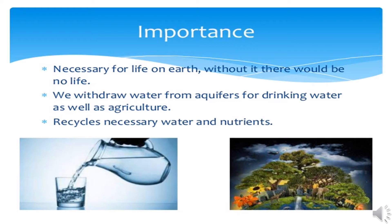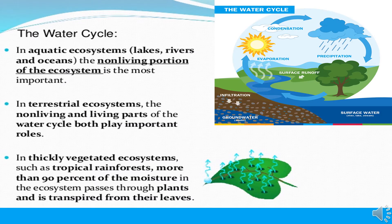The water cycle is very important for human as well as animal life. It is necessary for life on earth; without it, there would be no life. We withdraw water from aquifers for drinking water as well as agriculture and recycle necessary water and nutrients. In aquatic ecosystems like lakes, rivers, and oceans, the non-living portion of the ecosystem is the most important. In terrestrial ecosystems, both the non-living and living parts of the water cycle play important roles. In thickly vegetated ecosystems such as tropical rainforests, more than 90% of the moisture in the ecosystem passes through plants and is transferred from their leaves.